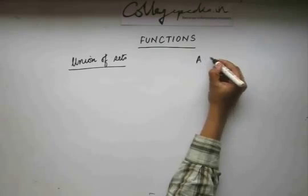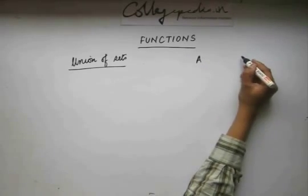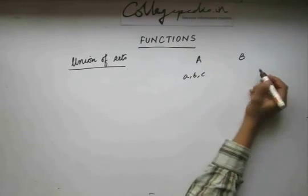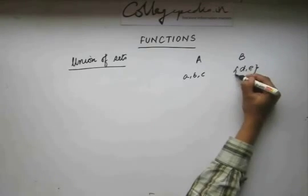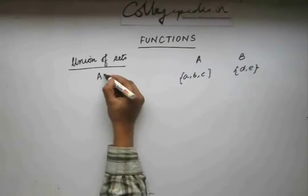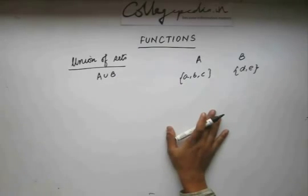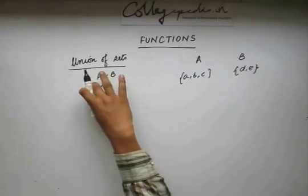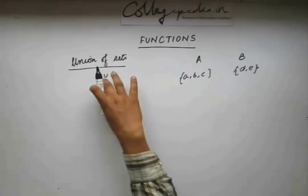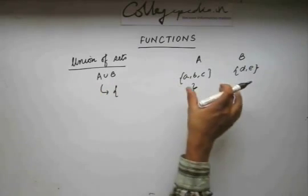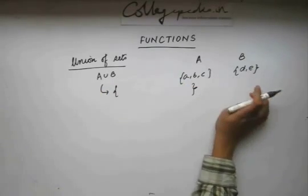Let's say I have two sets A and B. Set A has three elements and set B has two elements. The union of sets is denoted by A union B, and it comprises all elements which are either in set A or in set B. This union will take into account all elements that belong to any of these sets.